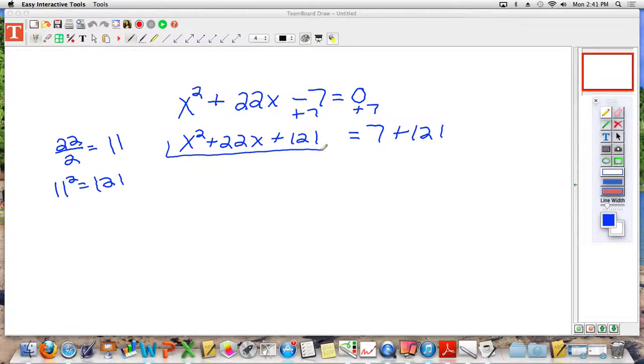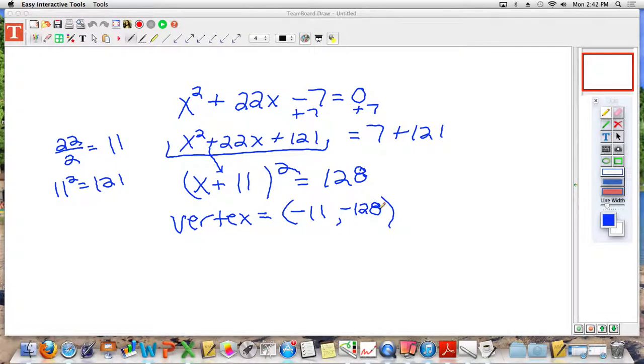These three terms, we have created this so that we can make a perfect square. So I put my x down, and bring the plus sign down. Half of 22 is 11 squared equals, what is 7 plus 121? 128. So the vertex is equal to what? Negative 11, so the opposite of plus 11, negative 11. And then at the end we're going to have negative 128.